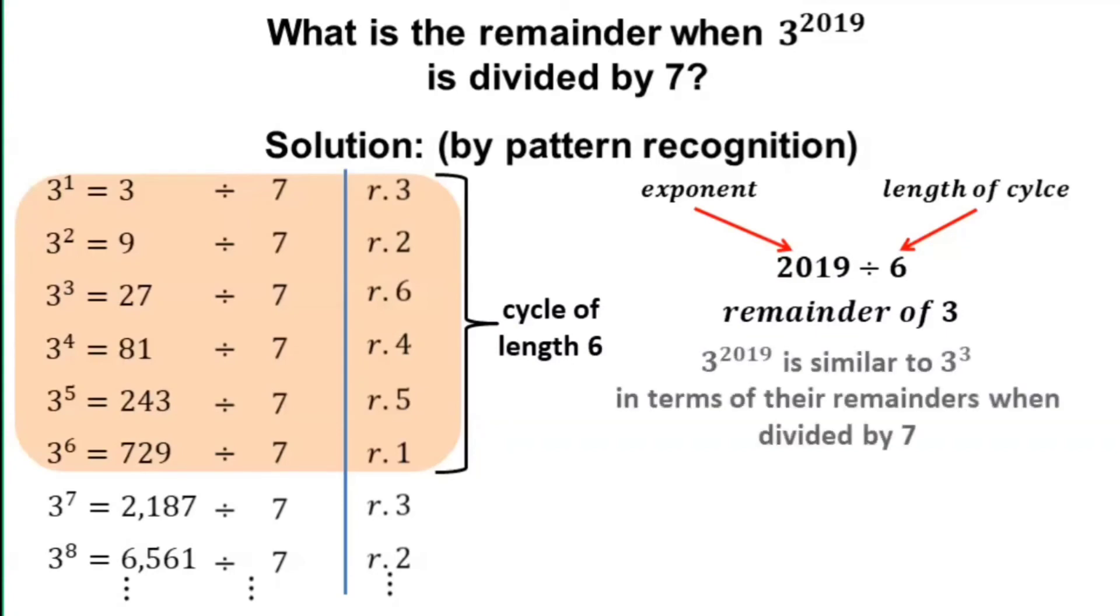This means that the original exponent in 3 to the power of 2019 can be reduced into 3 to the power of 3, since they are just similar in terms of their remainders when divided by 7.